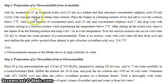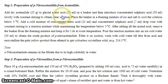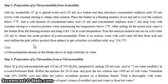The apparatus needed includes a conical flask, beaker, glass rod, and Buchner funnel. Procedure step 1 — preparation of paranitroacetanilide from acetanilide: Add dry acetanilide to acetic acid in a beaker, then introduce concentrated sulfuric acid slowly with constant stirring to obtain a clear solution. Place the beaker in a freezing mixture of ice and salt to cool below 5°C. Add a cold mixture of concentrated nitric acid and concentrated sulfuric acid dropwise with constant stirring, maintaining the temperature below 5°C.